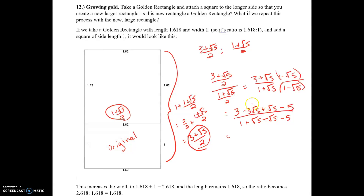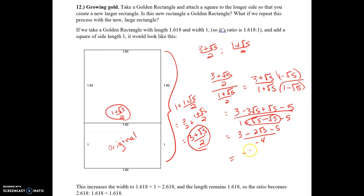When we combine like terms on the numerator, we get 3 − 2√5 − 5. On the bottom, the √5 terms cancel and 1 − 5 = −4. Finishing the top, 3 − 5 = −2, so we have (−2 − 2√5) / (−4). Dividing everything by −2 gives us (1 + √5) / 2.